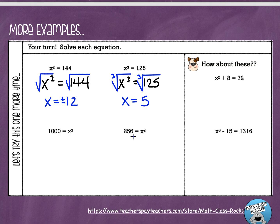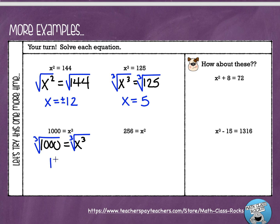These next two equations look kind of backwards — the variable is on the right side — but that's okay. It doesn't change anything. We have 1000 equals x cubed. The opposite of cubing a number is finding the cube root, so I take the cube root on both sides. The cube root of 1000 is 10 because 10 times 10 times 10 is 1000. The negative won't work here because negative 10 cubed would be negative 1000, and we need positive 1000. So x equals 10.